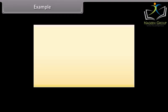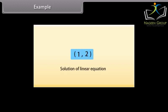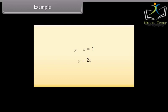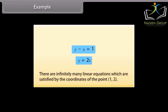Example: take the point (1, 2). We will find the equation of a line on which it lies. Since (1, 2) is a solution of a linear equation, we look for any line passing through it. One example is X plus Y equals 3, because putting X as 1 and Y as 2 gives 3. Other examples are Y minus X equals 1 and Y equals 2X. In fact, there are infinitely many linear equations satisfied by the coordinates of the point (1, 2).